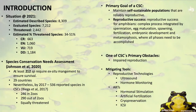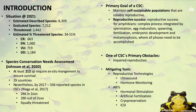One of the primary obstacles that CSACs face is impaired reproduction. This is where we introduce mitigating tools, including reproductive technologies such as ultrasound and hormone monitoring, or artificial reproductive technologies (ARTs) such as hormonal stimulation, artificial fertilization, sperm cryopreservation, and intracytoplasmic sperm injection (ICSI). We'll look at these in detail throughout the webinar series.